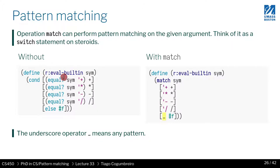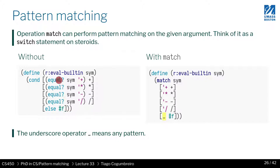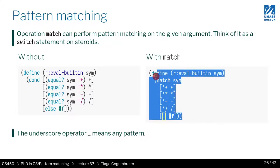Remember in homework three, we had this eval built-in function, which given a symbol would return a function. For instance, if I were to give the symbol plus, it would return the addition function. If the symbol matches star, you would return multiplication. With a dash, you would return minus, and the slash, you would return division. But there is a lot of redundancy going on here — we're always doing this equal-sym, equal-sym, equal-sym. As good programmers, we always want to strive to have less redundancy in our code and have the programming language do the work for us.